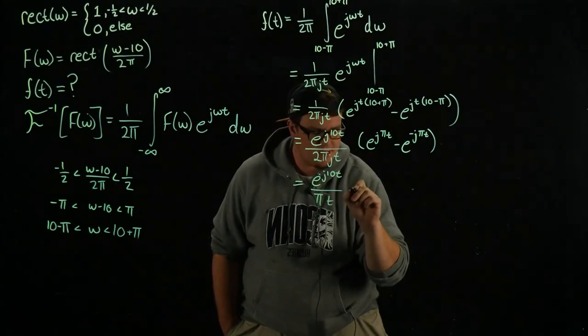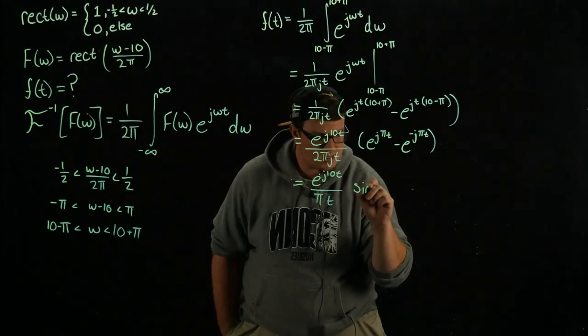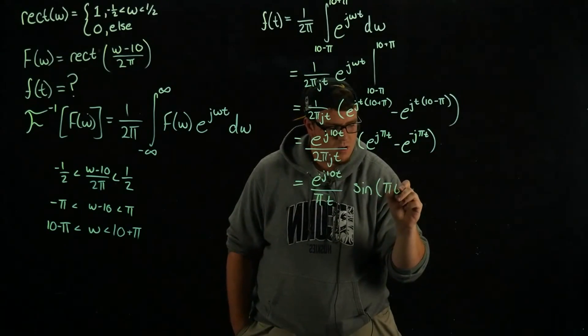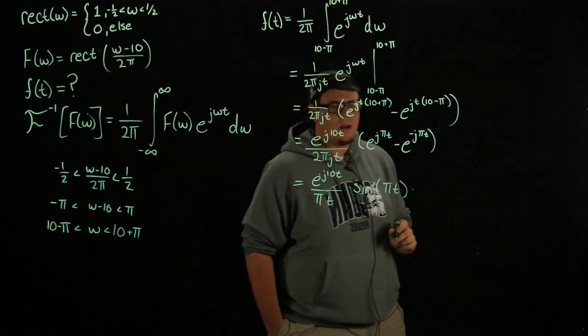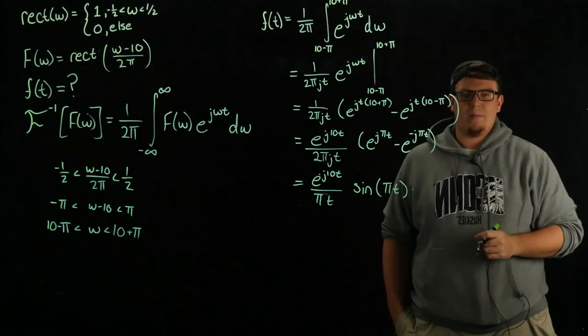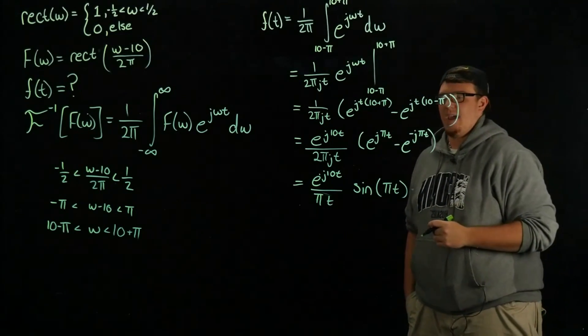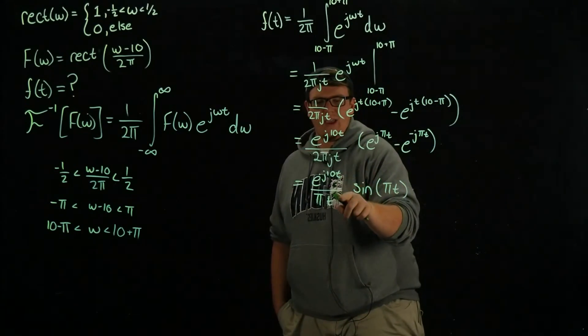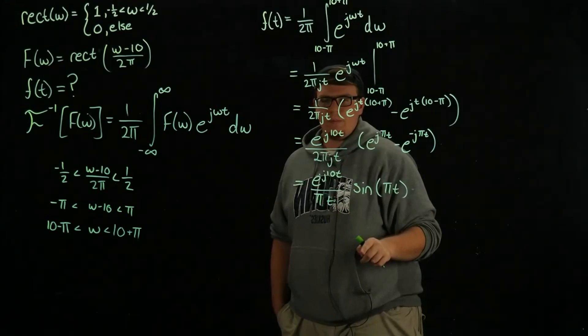Utilize that 2 j to make this sine of pi t. One other thing we can do here is we have a sine pi t over pi t.